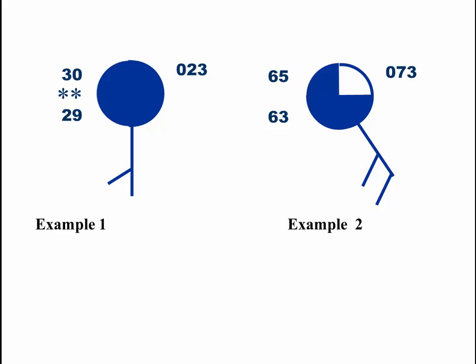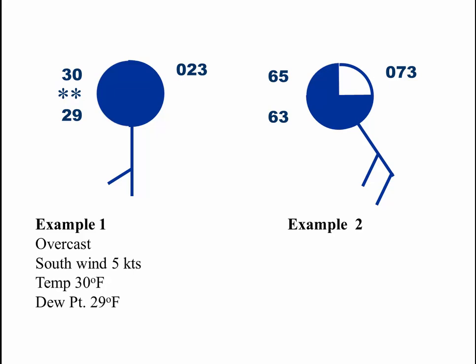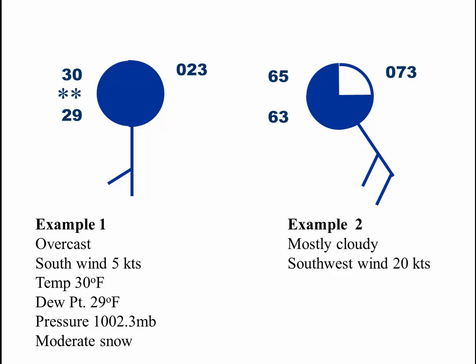Let's take a look at example one. We can see that it is overcast with a south wind at 5 knots, a temperature of 30 degrees Fahrenheit, a dew point of 29 degrees, pressure of 1002.3 millibars, and there's moderate snow. Example two: it's mostly cloudy with a southwest wind at 20 knots, temperature of 65, dew point of 63, and a pressure of 1007.3 millibars.